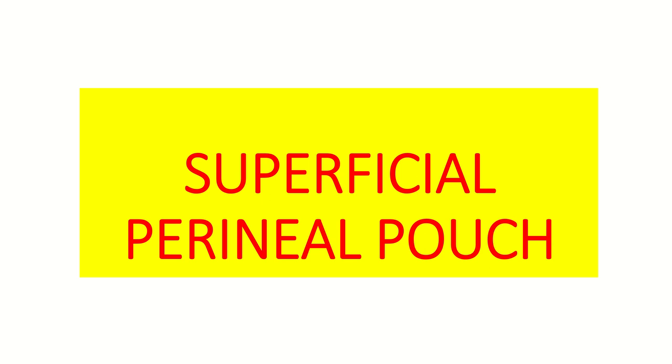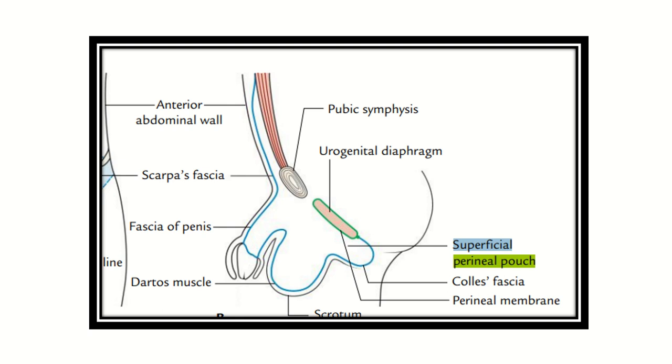Welcome to a lecture on the superficial perineal pouch. This is one of the most difficult topics in the pelvic region and is also related to other parts of anatomy — it is a hot topic. So be careful when reading about the superficial perineal pouch. First of all, we have to know the perineal pouch, which is superficial. Here in this picture we can see the urogenital diaphragm, which is a very important structure.